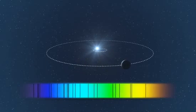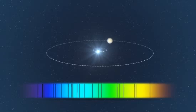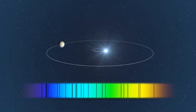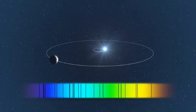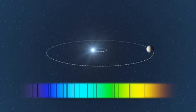A planet in orbit causes its star to regularly move backwards and forwards as seen from Earth. This creates a tiny shift of the star's spectrum that can be measured with an extremely sensitive spectrograph such as HARPS.